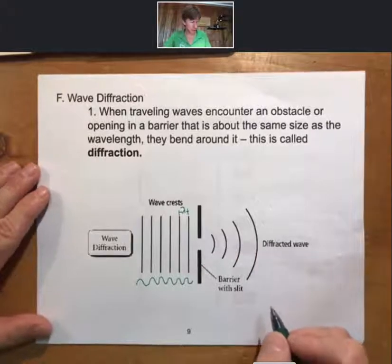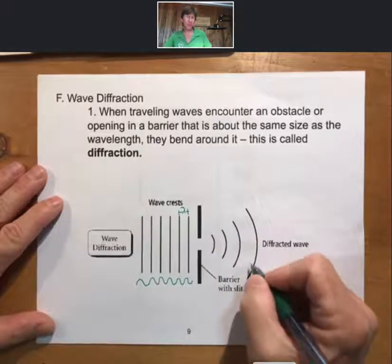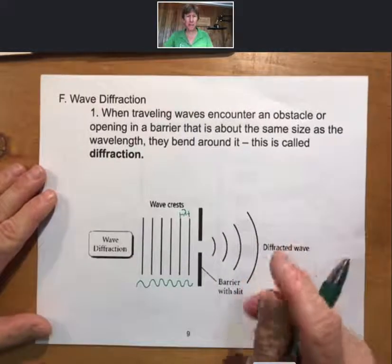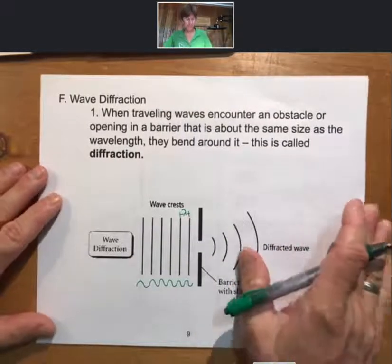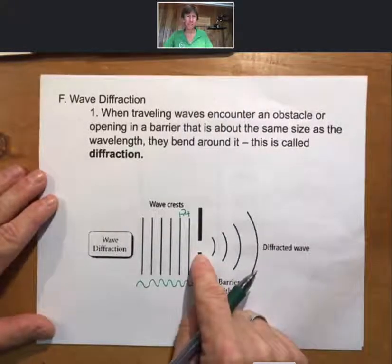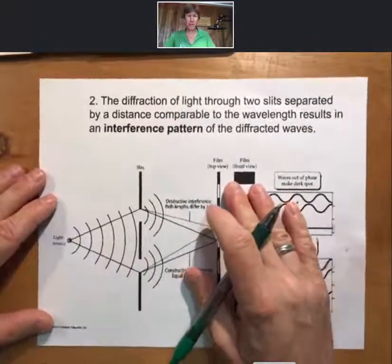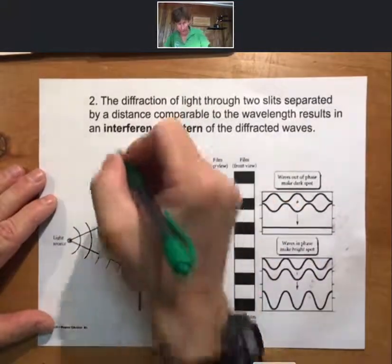When that happens you will have a diffracted wave, and the diffracted wave is bent around that hole. So that is diffraction, and that is when you have a single opening or a single slit. Then you go to a double slit.